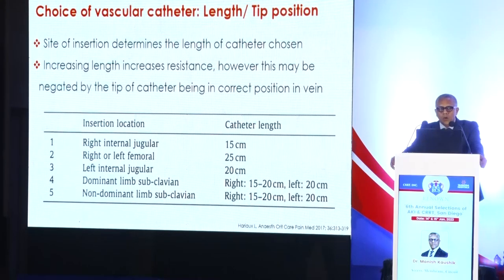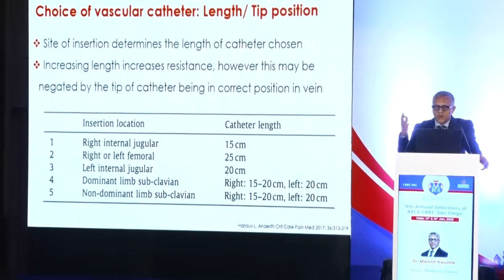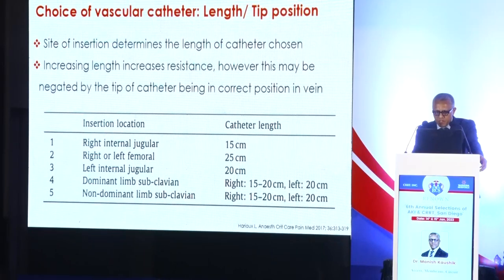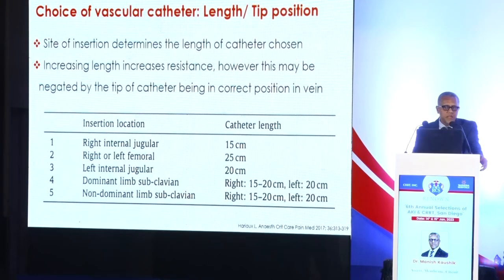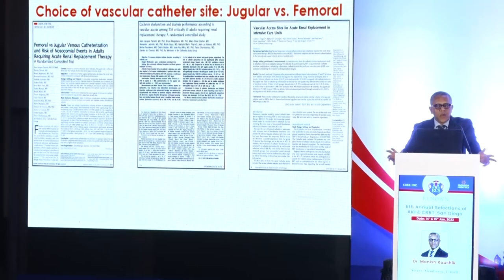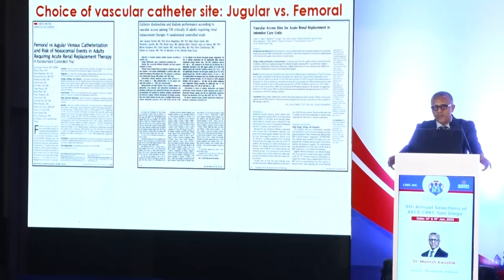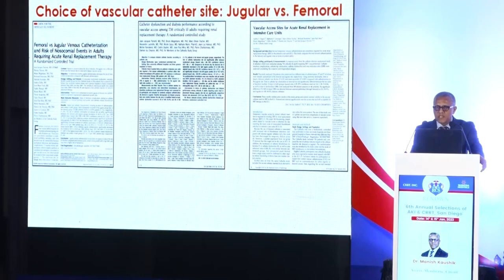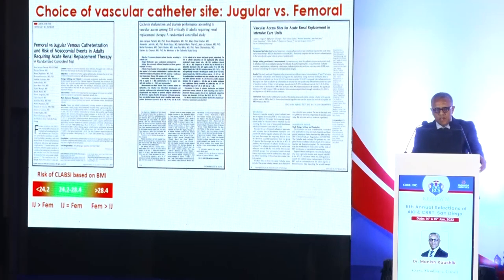The site of catheter insertion and the target tip position will determine the catheter length to be used. Various formulae exist but not all are reliable. The KDIGO guidelines suggest specific catheter sizes depending on the insertion site. In average or larger adults, the left IJ catheter should preferably be 20 cm, and the femoral catheter should be at least 24 to 25 cm.